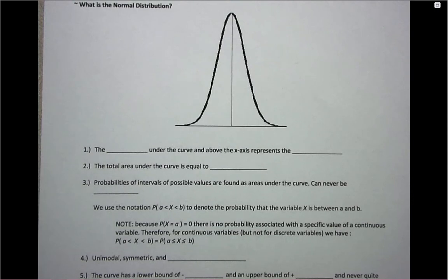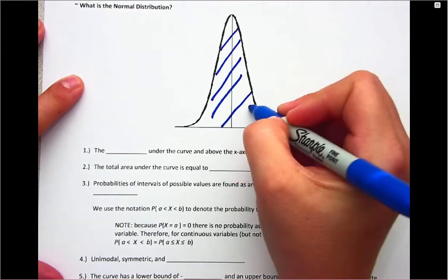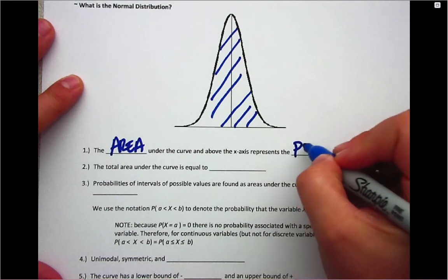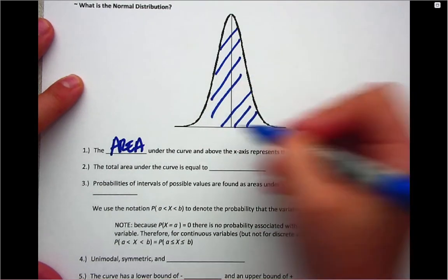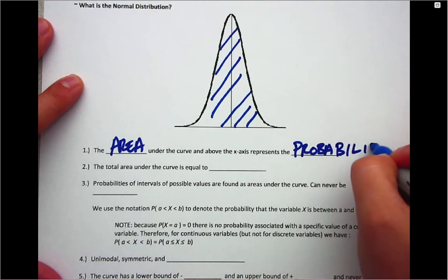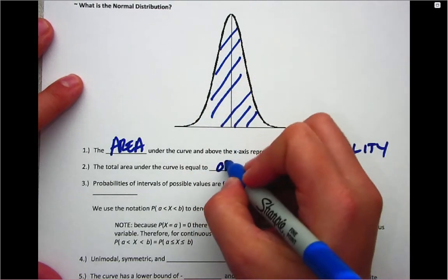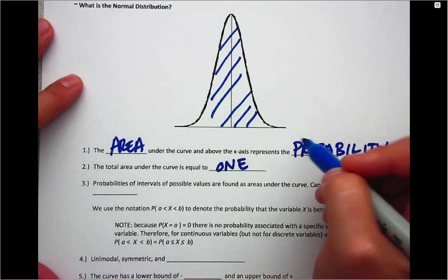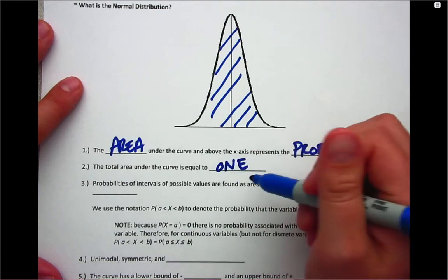Now this curve, the area underneath it, represents a probability. When you are looking at the normal distribution, the physical space represented underneath the curve and above the x-axis represents an actual probability. Like probabilities max out at a hundred percent, this total area will max out or be equal to one. The area underneath the curve and above the x-axis is representing probability and the total area is equal to one.